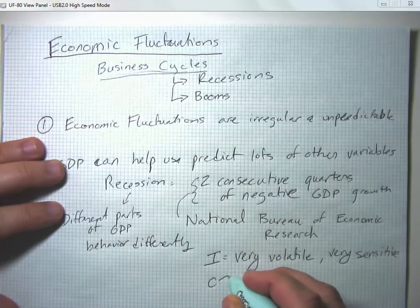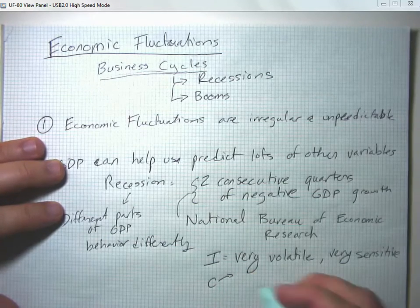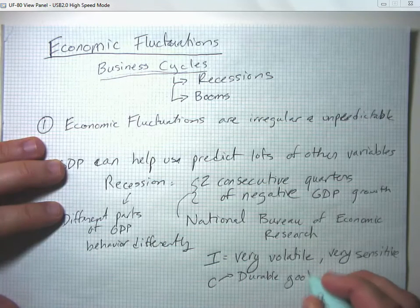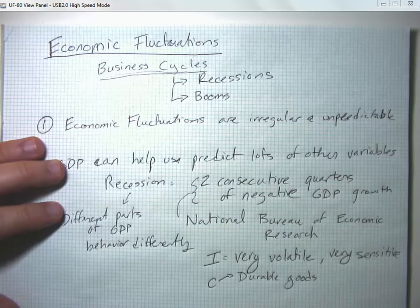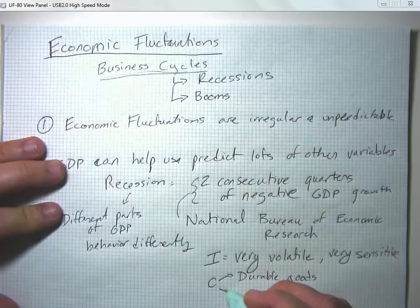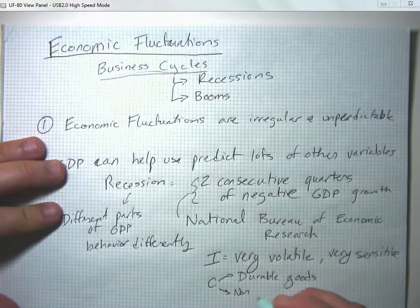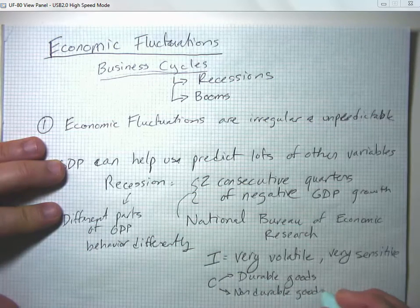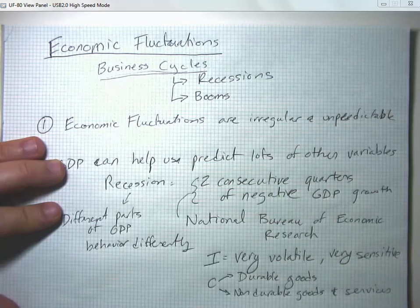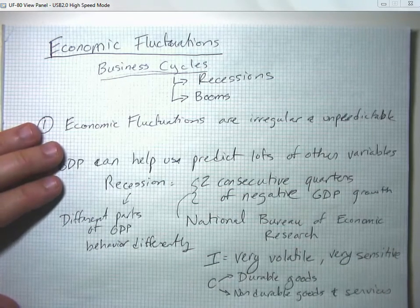Some portions of consumption spending are also very sensitive — in particular, consumer spending on durable goods, things like cars, furniture, or refrigerators. A durable good is a big-ticket item expected to last three or more years. On the other hand, non-durable goods and services fluctuate much less. So different parts of GDP behave very differently.